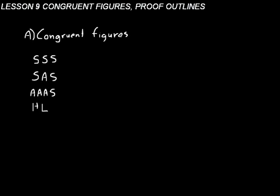When we're talking about congruent figures, remember that means they have identical shapes. Anytime you're trying to figure out if something is congruent, you have to have something to compare it to — you're looking at at least a pair of shapes. When we're doing proofs, we're mainly going to be concerned with triangles. Here are four postulates that we use when trying to prove if two triangles are congruent.